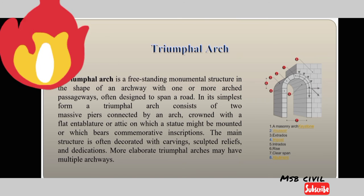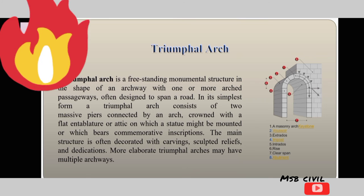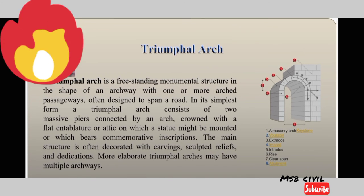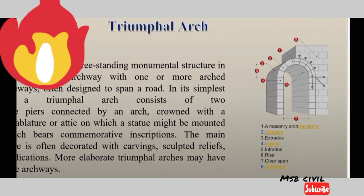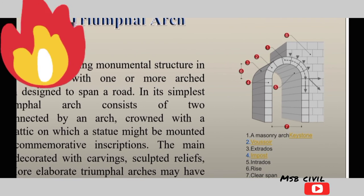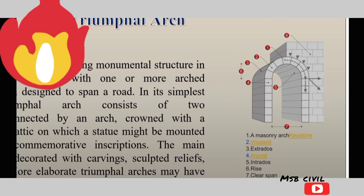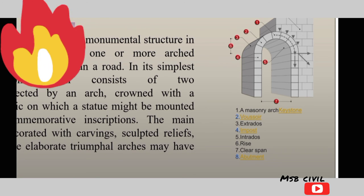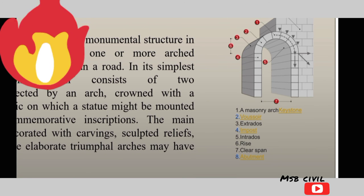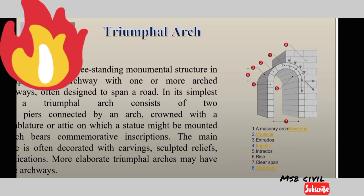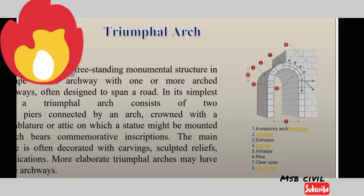Here are the specifications of an arch. Number one shows the masonry arc and the keystone. Number two is the voussoir. Number three shows the extrados, intrados, and rise. Number seven indicates the clear span. The abutments are also shown here — abutments are used for giving support to the arch.